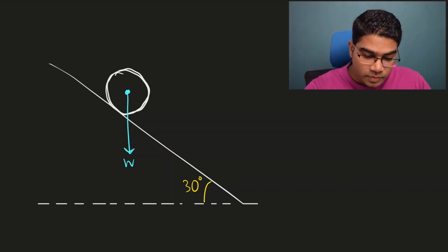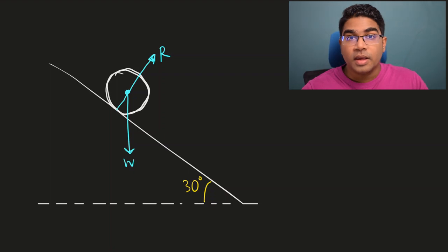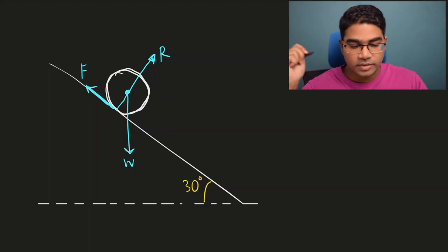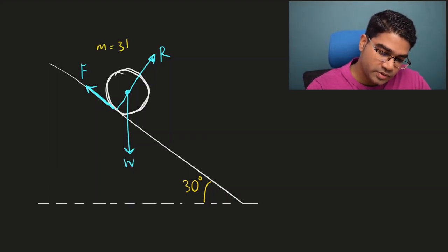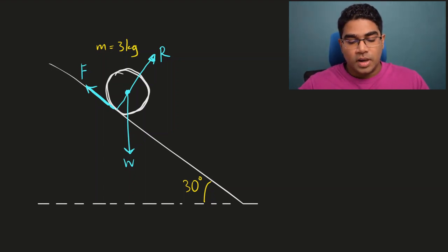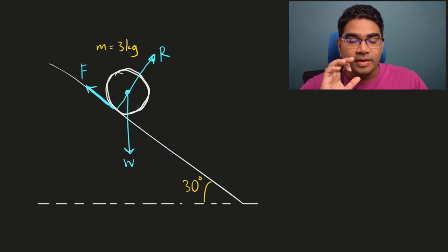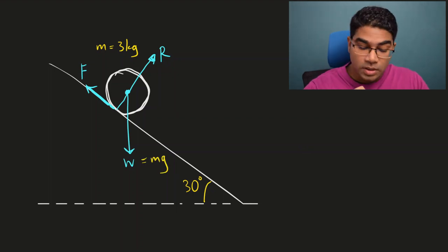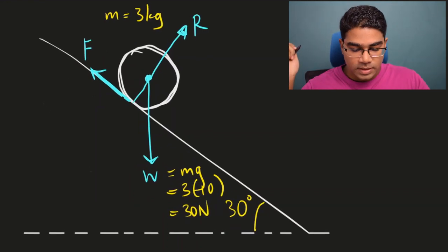Let's say the mass of the object is 3 kg. We can immediately find the weight: W = Mg = 3 × 10 = 30 N, using gravitational acceleration of approximately 10 m/s². So the weight is 30 newtons. Now we need to find the normal reaction and friction using the equilibrium condition.